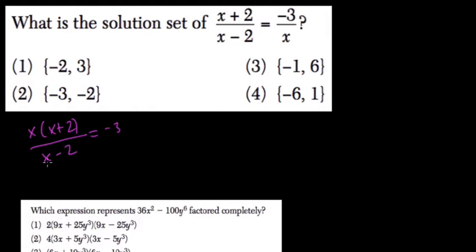I don't want this x here in the denominator, so I'll multiply both sides by x minus 2. The left hand side cancels out, so we'll have x times x plus 2 equals negative 3 times x minus 2.